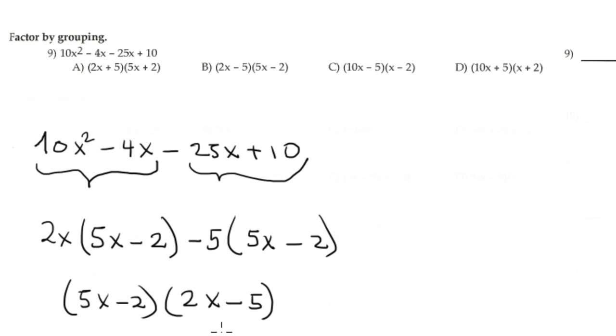And this is the answer: 5x minus 2 times 2x minus 5, that corresponds with option B.